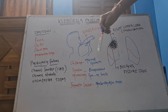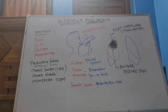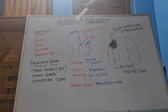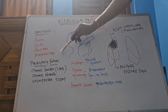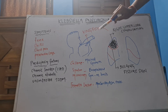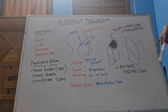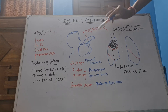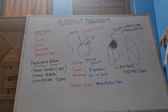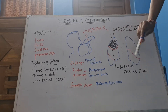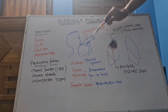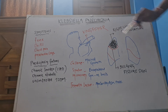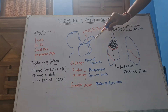The predisposing factors are chronic smoker, chronic alcoholic, and uncontrolled diabetes mellitus. The symptoms will be similar to any other pneumonia: fever, chills, chest pain, and productive cough. This patient, being in a drunkard state, is asleep and not conscious, so he will aspirate the secretions — the mucoid secretions — inside.